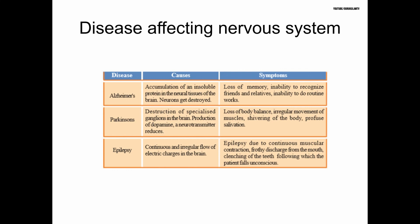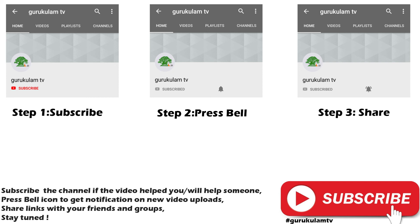Diseases affecting the nervous system include Alzheimer's disease, caused by insoluble protein buildup in neural tissue, leading to memory loss and inability to perform daily routines. Parkinson's disease involves reduced dopamine as a neurotransmitter, causing irregular muscle movements and loss of body balance. Epilepsy involves continuous, irregular electrical activity in the brain causing irregular muscle contractions. I will see you in the next video.